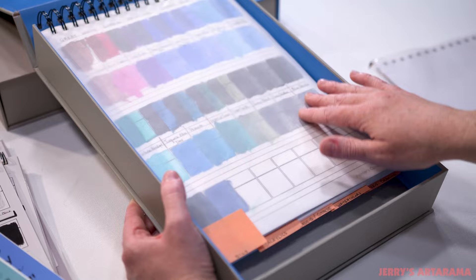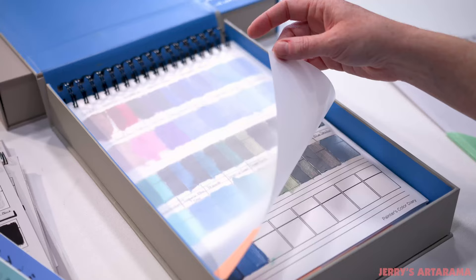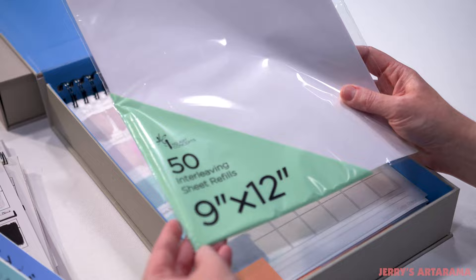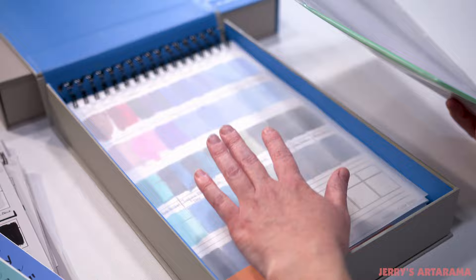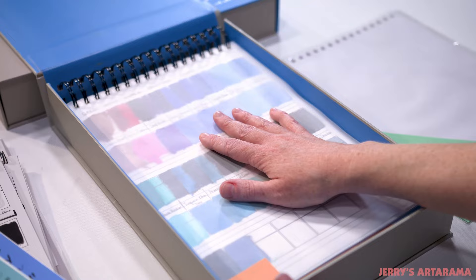Speaking of glycine, I know that the original books come with the glycine sheets but they don't come out, so we actually came out with the interleaving sheet refills. Same size as it's been for the full-size sheets and you get a pack of 50. So 50 swatch pages you can just pop these right in just like you would the sheets and keep them nice and protected and they won't stick to each other.